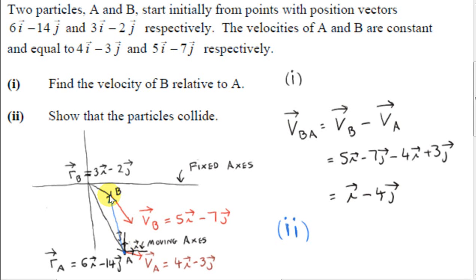Now we could do it the other way around actually. We could put our moving axes at B and consider the position of A relative to B. But since we already have our relative velocity vector defined as the velocity of B relative to A, we are going to consider the position of B relative to A.